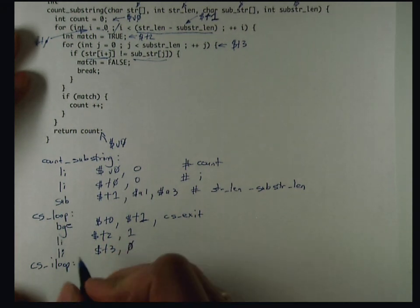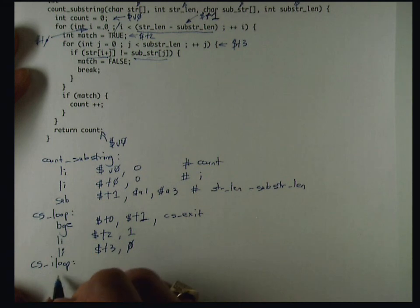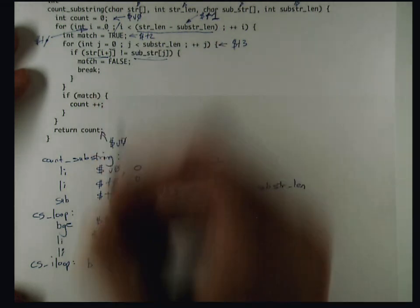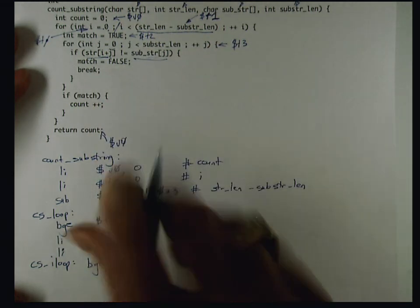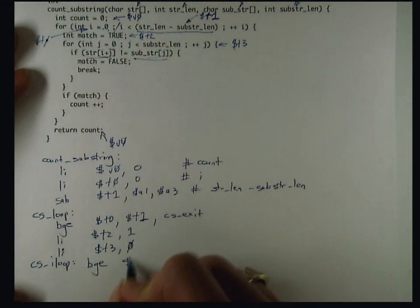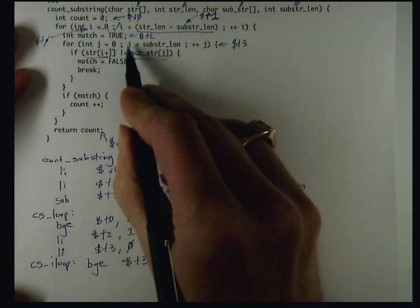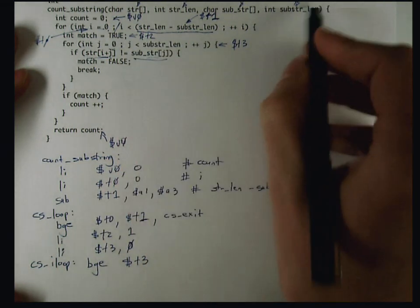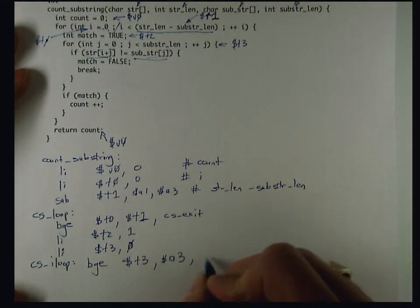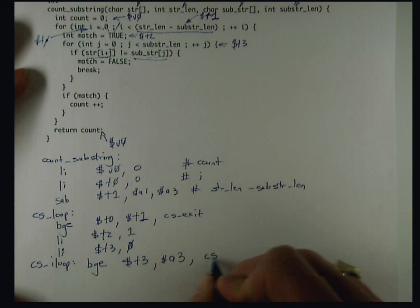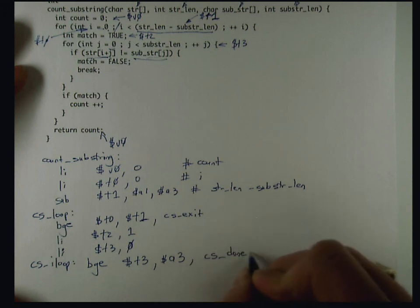This is the beginning of the inner loop, so I'll call that CSI loop, and I'll do that test with a branch if greater than or equal, inverting the condition. In this case, I'm comparing T3, which is J, with substring length, which is A3, and that will be, I'll call that exit, CS done inner.